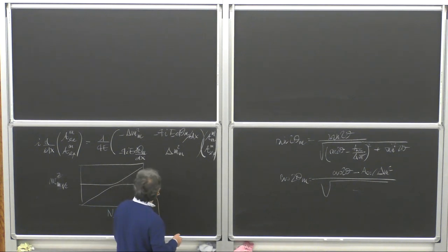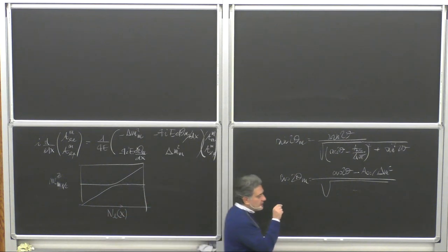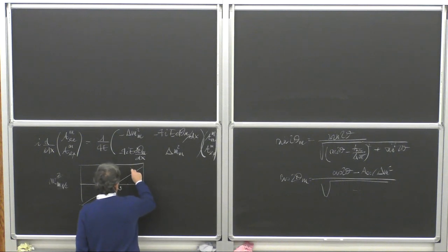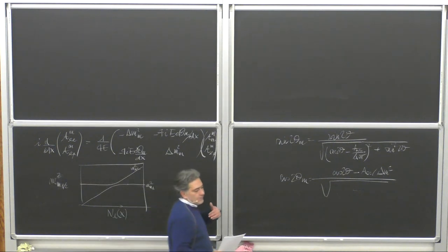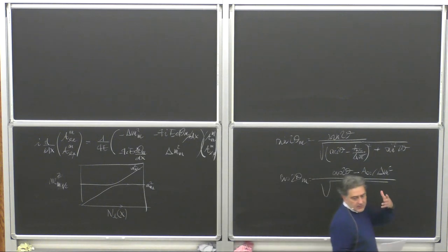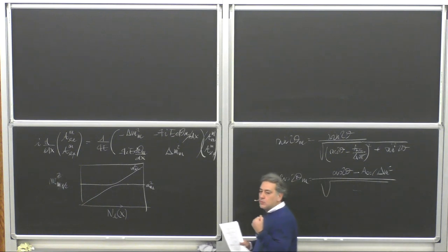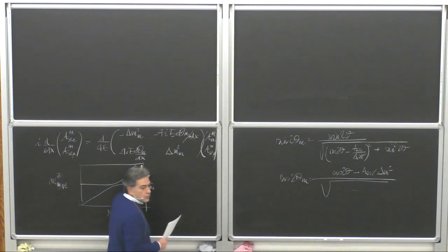Considering the relation between the flavor and mass eigenstates, at higher density you start with nu_2 in matter (m2² is the upper curve). In the center of the sun, at high density, an electron neutrino produced there will be a nu_2 in matter.